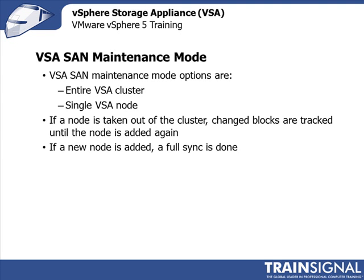One of the features of VSA is called SAN maintenance mode — similar to putting an ESXi host in maintenance mode to evacuate virtual machines. With VSA SAN maintenance mode, you can put either an entire VSA cluster or a single VSA node into maintenance mode. Changed blocks are tracked while a node is out of the cluster, so it doesn't have to resynchronize all data when it rejoins — only the changed blocks. If a brand new node is added to a cluster, however, a full synchronization is performed.